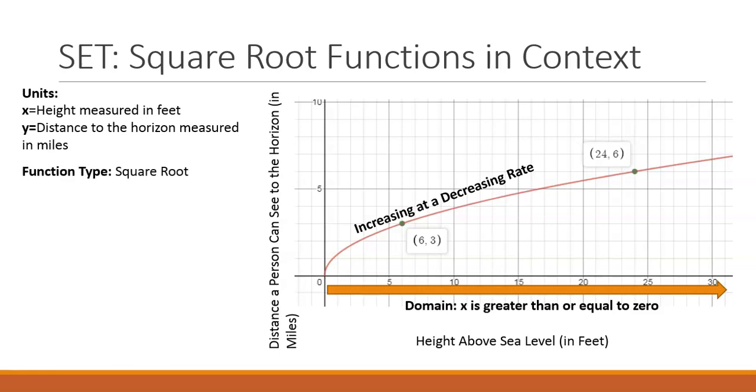This function type is a square root function. There are a few key things about this graph that tell us that this is a square root function. One of those things is the domain. The domain here is greater than or equal to 0. Also, the rate of change here is increasing at a decreasing rate, which indicates to us that it is a square root function.